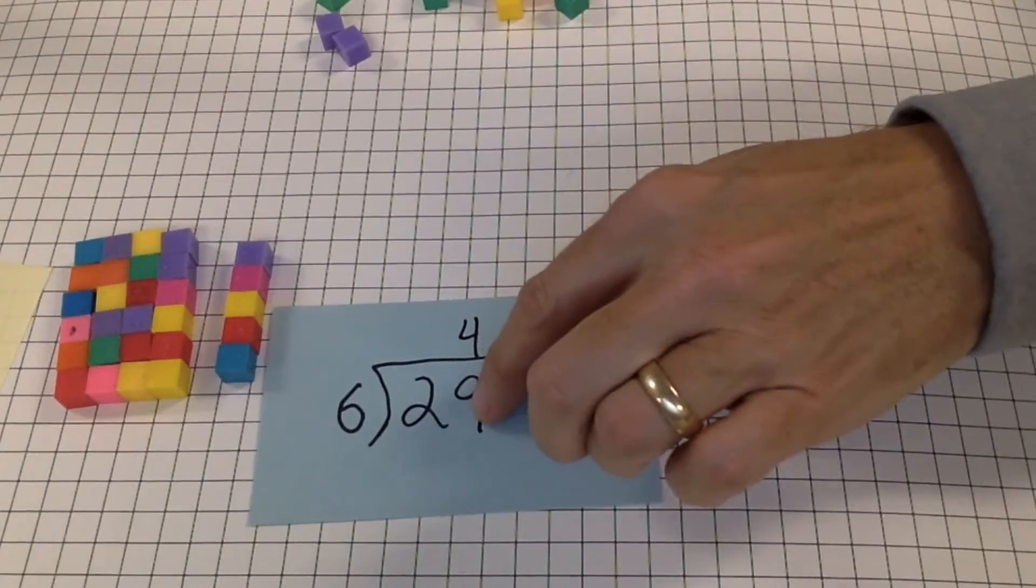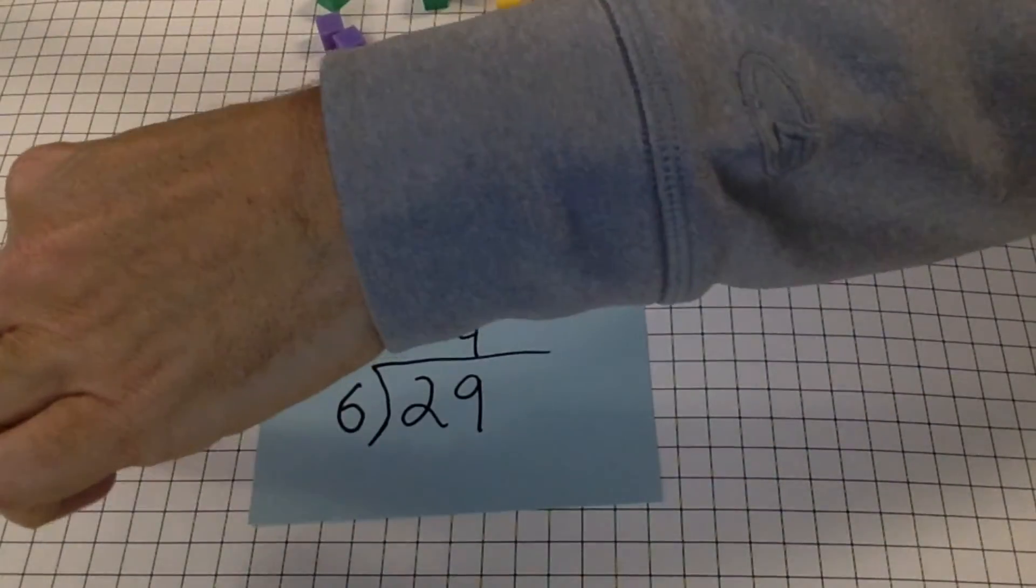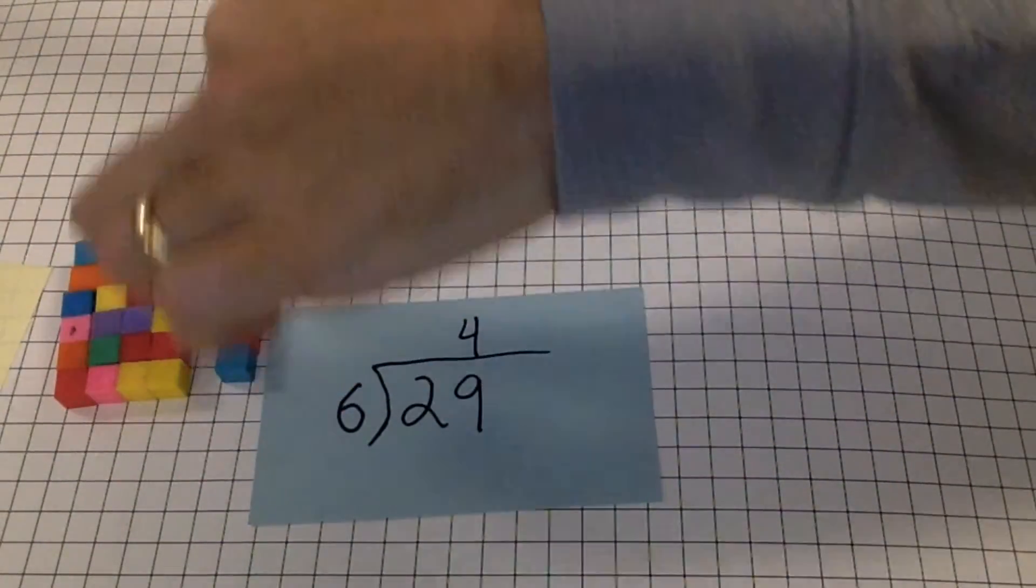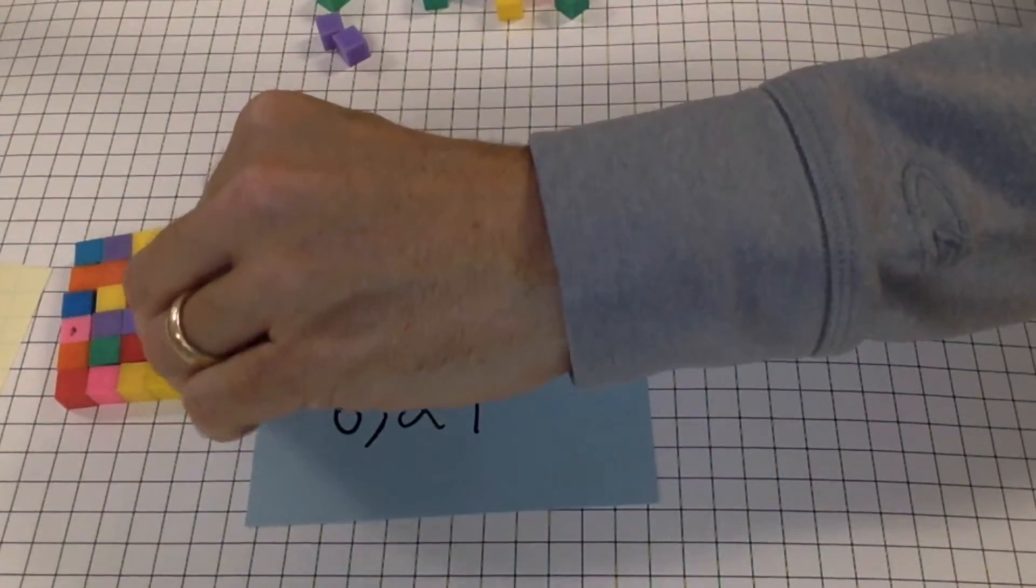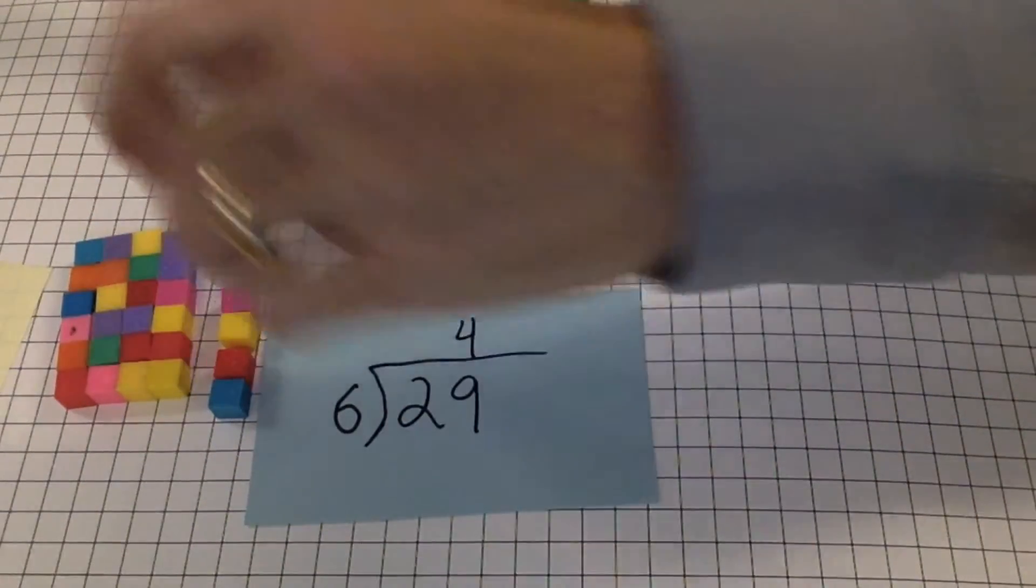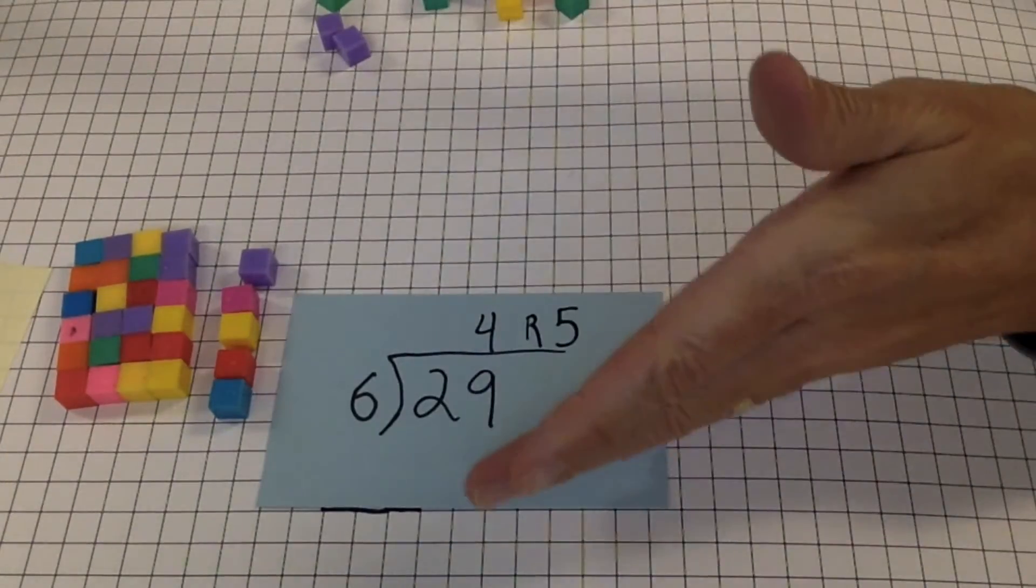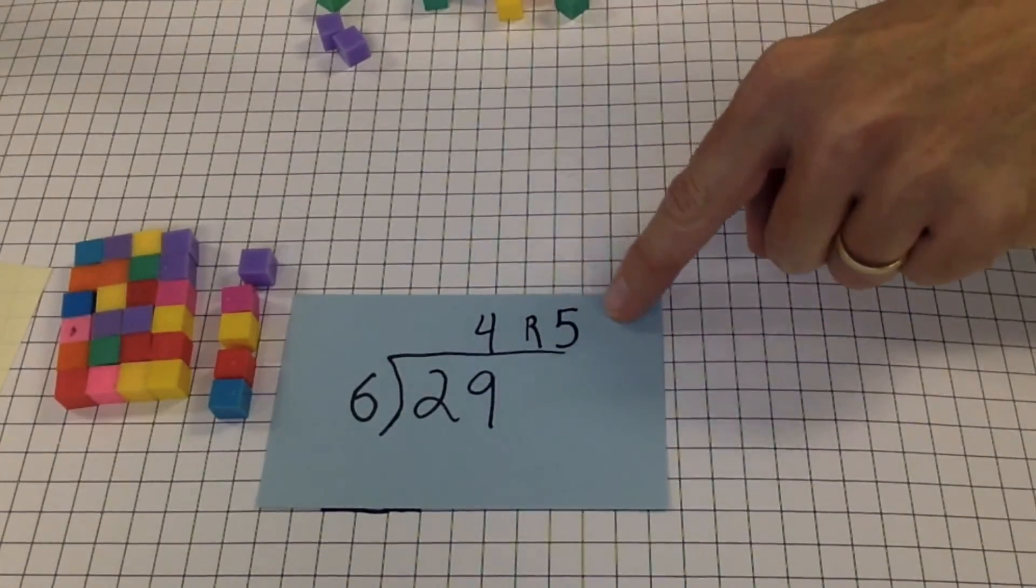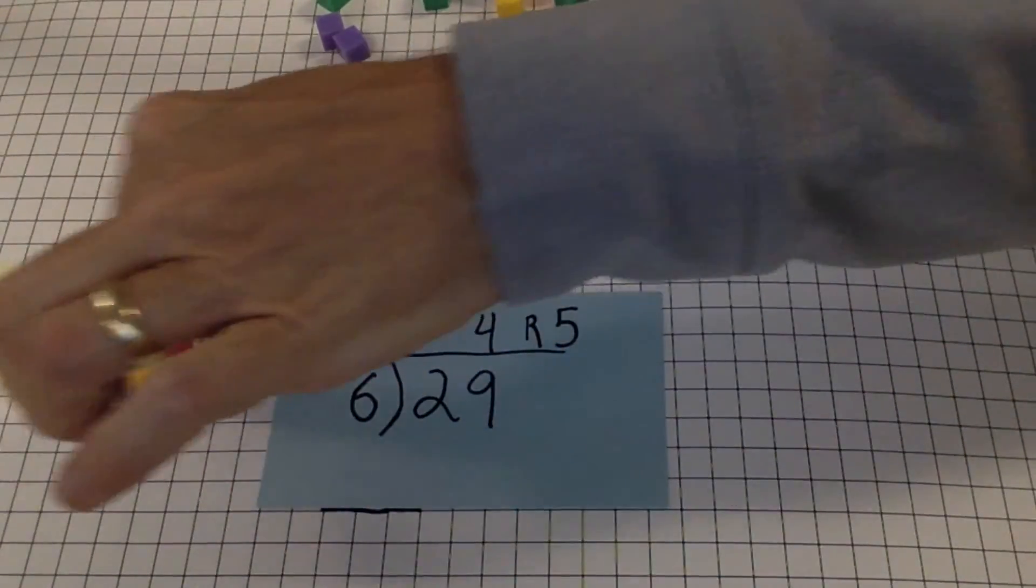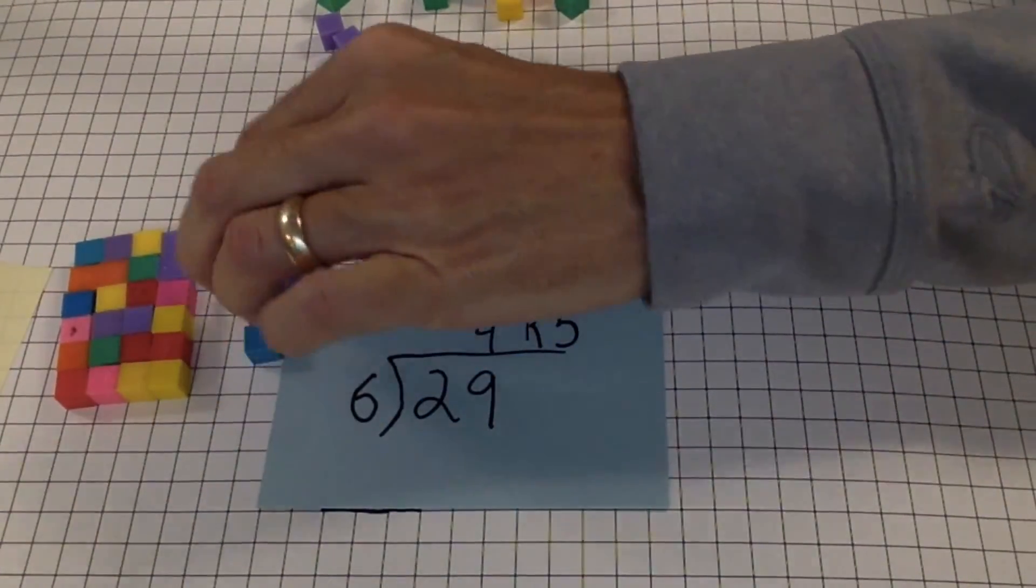So 29 in rows of 6 gives us 4 columns with this left over. 4 columns. How much is left over? 2, 4, 5. We're going to call that a remainder for now. And when we solve it, we're going to write it with 4, remainder, 5. Because we have 4 columns with 5 cubes left over.